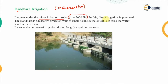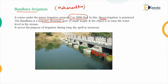This technique uses the approach of direct irrigation, meaning the stored water is directly used for irrigation purposes. Bandara is a masonry diversion where small check dams of small height are constructed. The purpose of these diversions is to store water so that the water level is raised, and that stored water is then diverted in another direction to irrigate the fields.